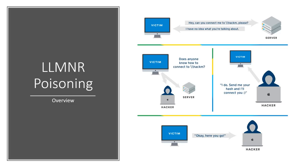A brief overview of the attack looks like this: a victim says they want to connect to a server — say 'hackme' — but it's spelled incorrectly, creating a DNS issue. The DNS server says it has no idea, so it sends out an LLMNR broadcast asking if anybody knows how to connect. As a hacker sitting in the middle of this attack, we say 'I do — go ahead and send me your hash and I'll connect you to that server.' The victim says okay and sends their hash.